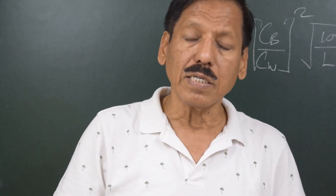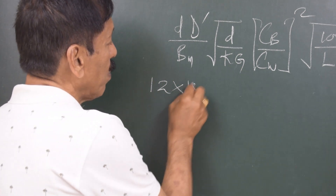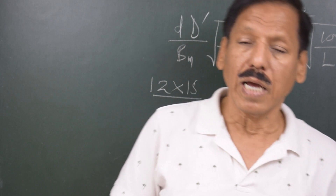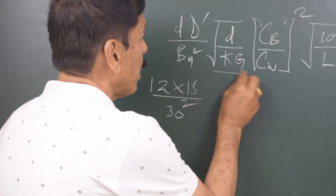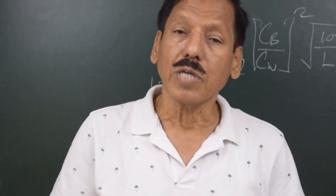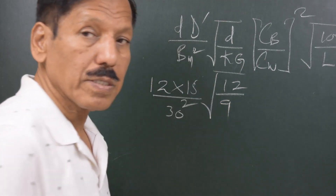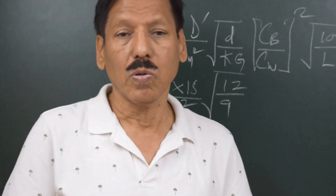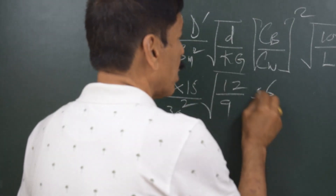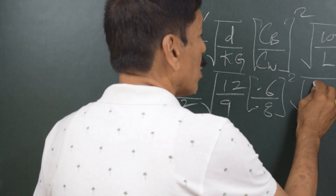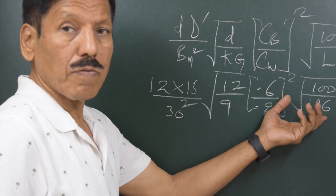Let us consider a realistic example. The draft is 12 meters, the modified molded depth is 15 meters, and the beam at mid-draft is 30 meters. The KG is 9 meters, meaning the center of gravity is below the waterline. We take Cb as 0.6 and Cw as 0.8. The ship is assumed to be 196 meters in length, so √(100/196) = 10/14.